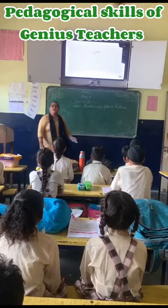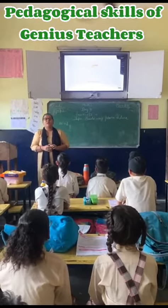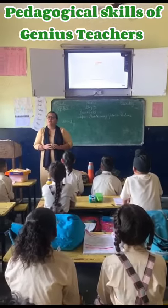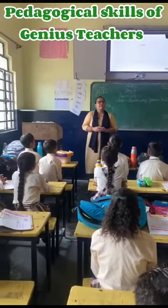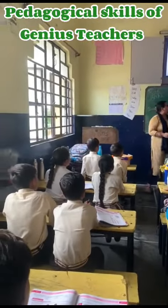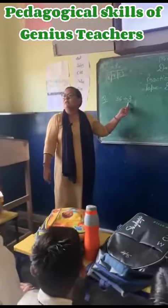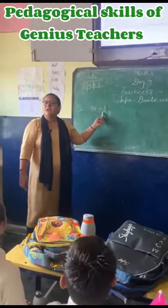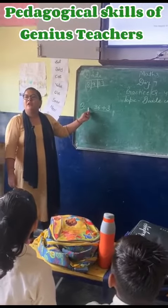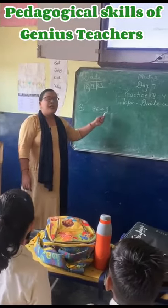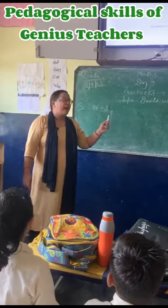We have two methods to do division. First method is using place values, and second method is long division method. Today we learn about dividing using place values. The term 'dividend' means total, and 'divisor' is the number. Very good.